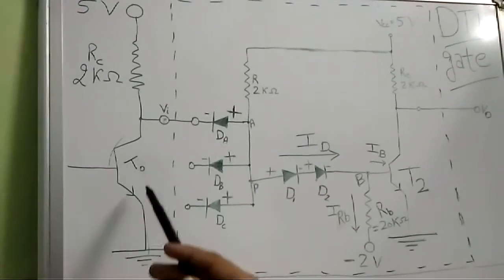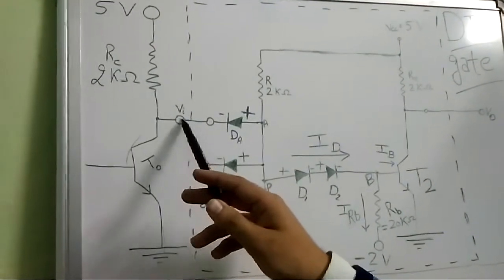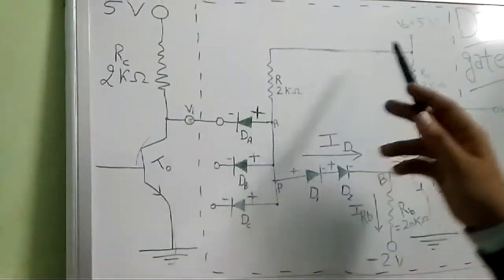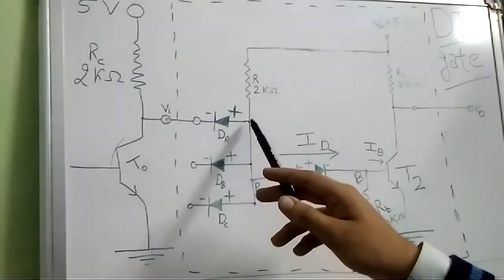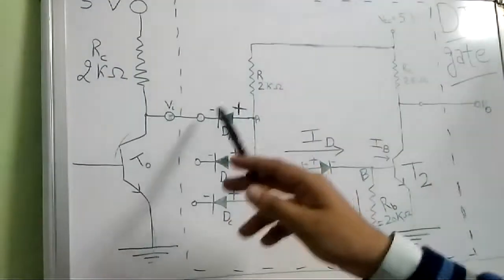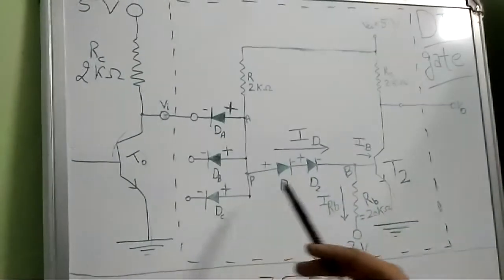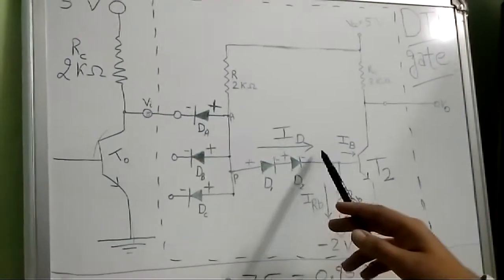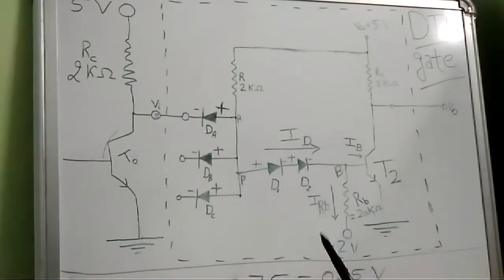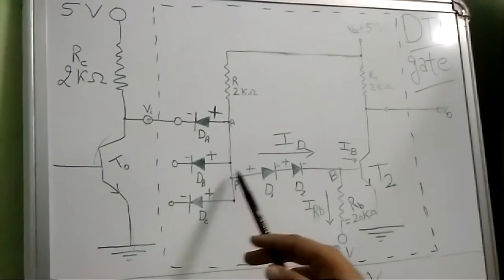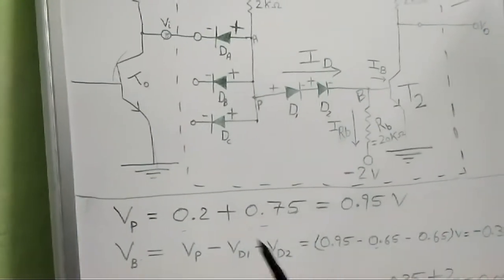Let us assume transistor T0 is in saturation, so the logic level voltage here is 0 and the supply is 5V. Most current will flow through diode DA, which goes into saturation, and very little current flows in the other direction, so that diode goes into cutoff. The voltage at point P is calculated as 0.2 plus 0.75V, which equals 0.95V.